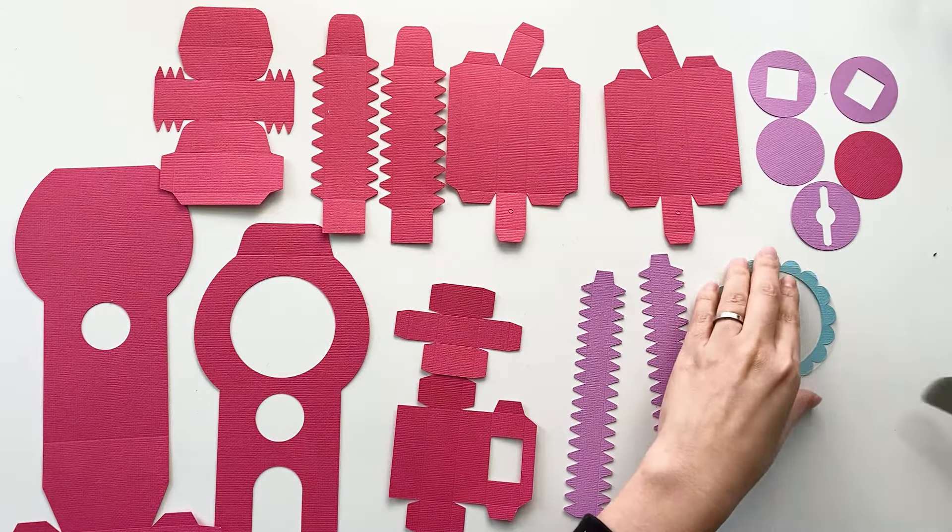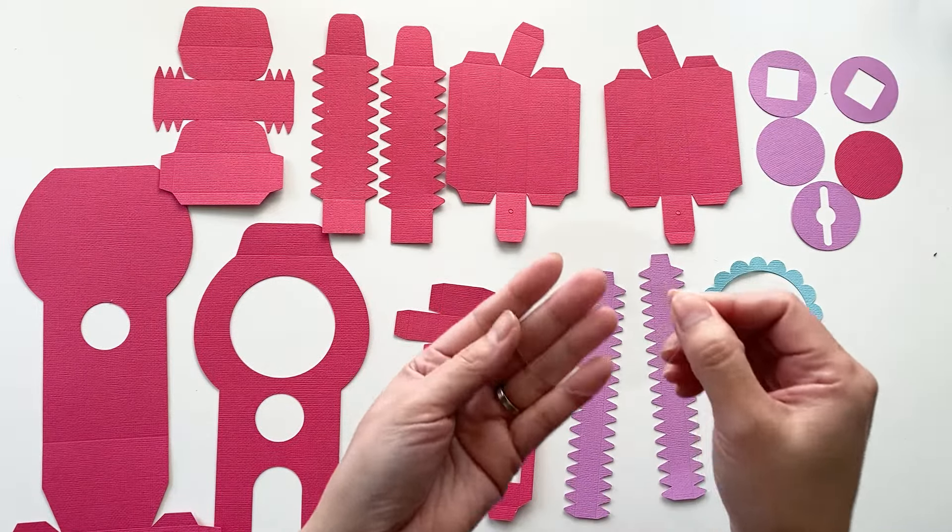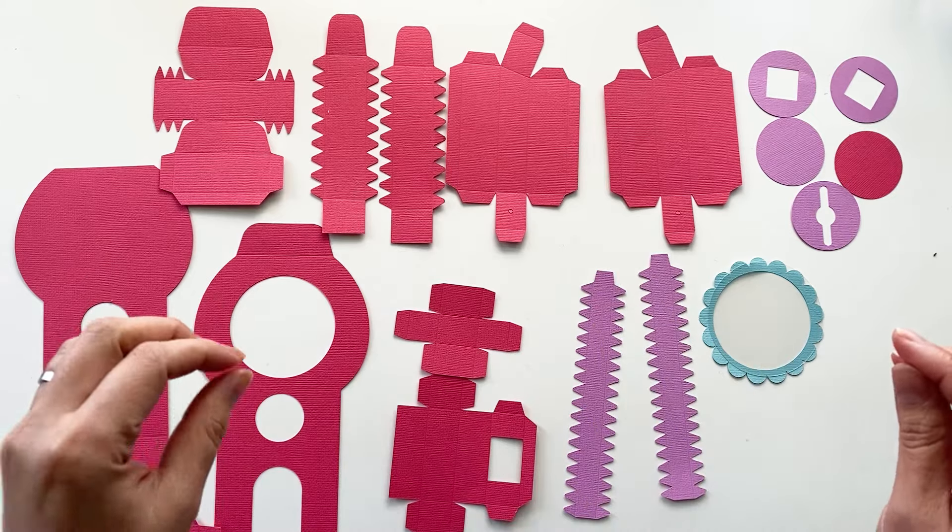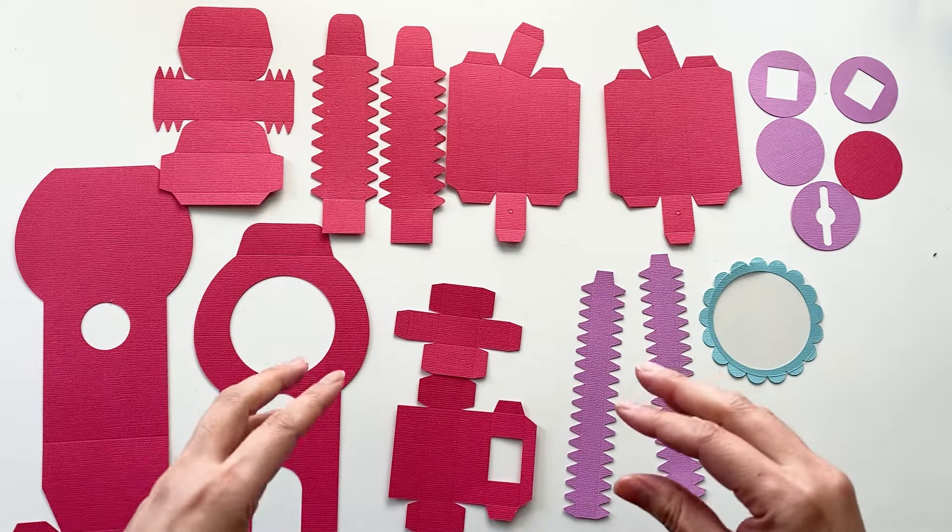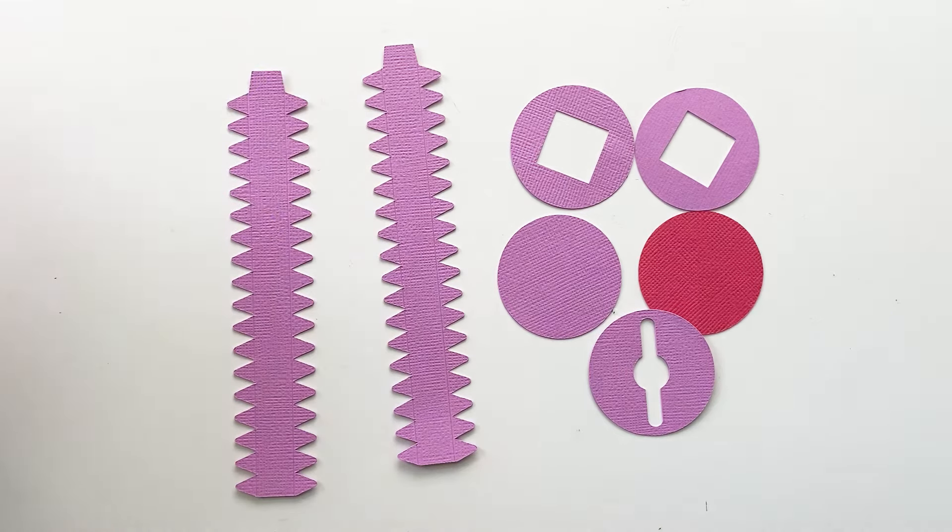Here are all the elements including one acetate sheet circle. We are going to assemble all the small elements and we will put them together in the end. Get these pieces. We will make the dials at the front and the back.